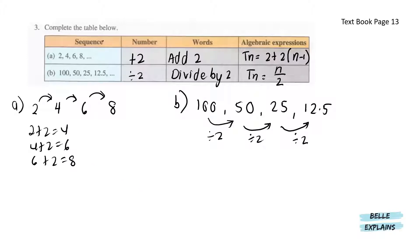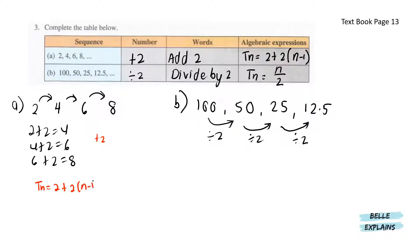Next, complete the table below. In this sequence there's 2, 4, 6 and 8. In between those numbers, it's plus 2, plus 2 and plus 2. So we know the pattern is plus 2. In words, you can just say add 2. For the algebraic expression, we take Tn of the first term plus the difference in between those numbers and n minus 1.